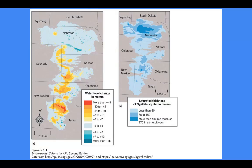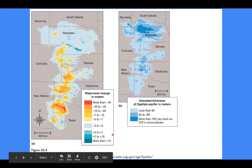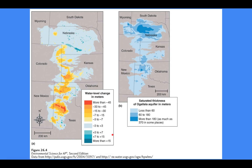The largest aquifer in the United States is the Ogallala aquifer. You can see it goes all the way from South Dakota down into Texas — massive amounts of water. If you know anything about this part of the world, especially Texas, Oklahoma, Kansas, Nebraska — a lot of farming. You can see how much it has changed through the years with people tapping into that resource. The largest is the Ogallala, and it's also fun to say.